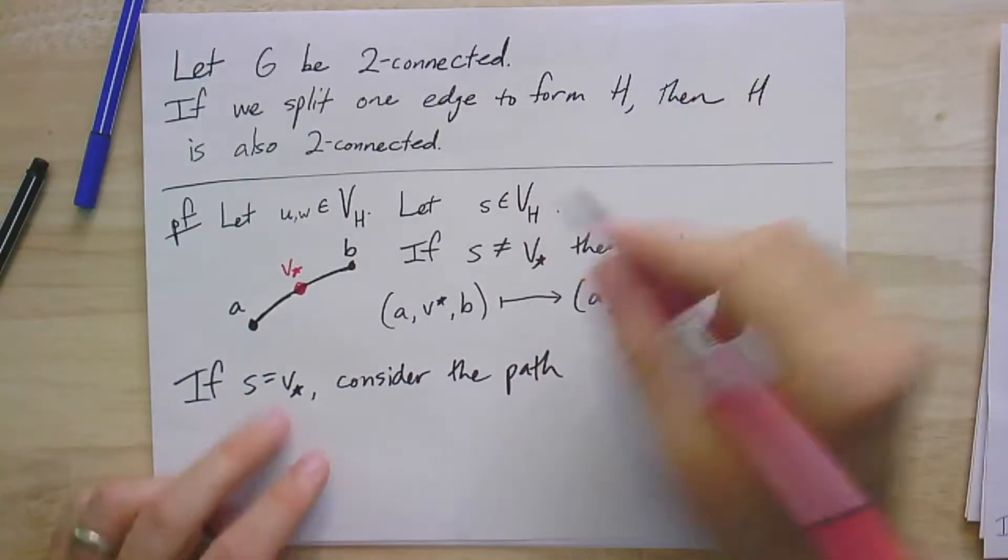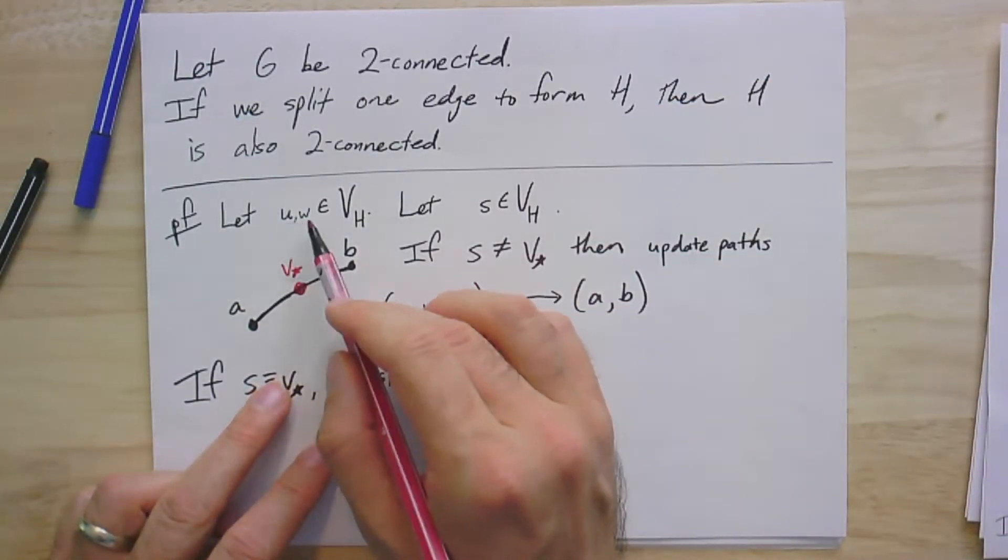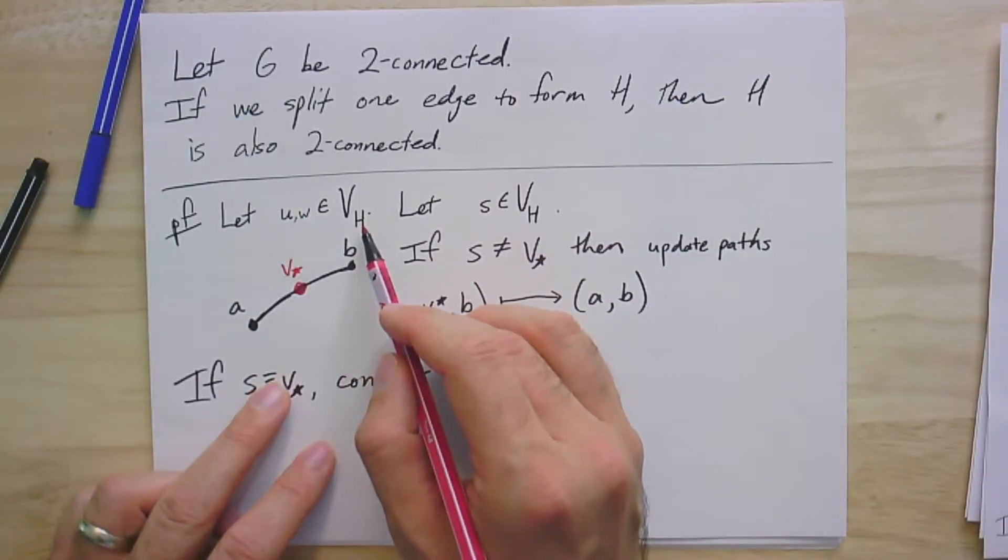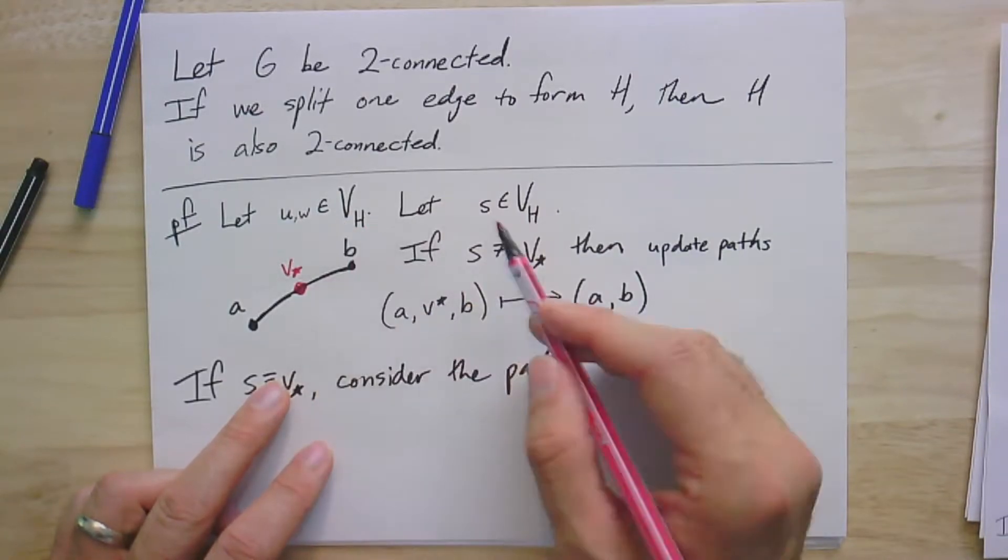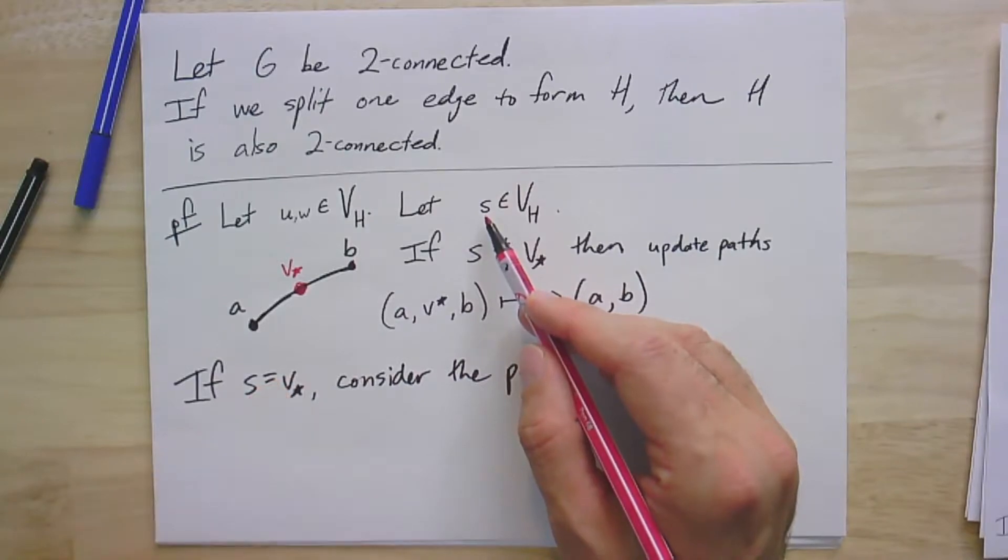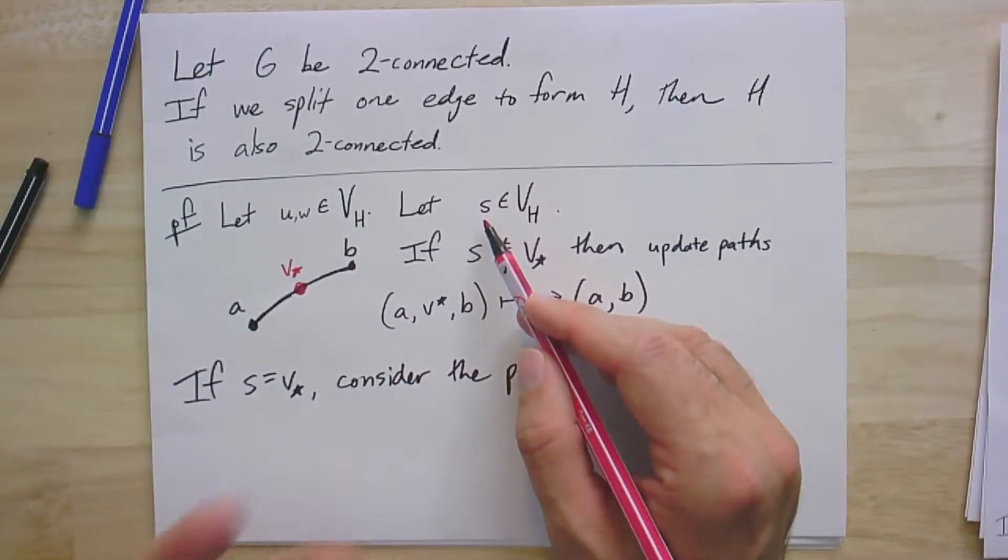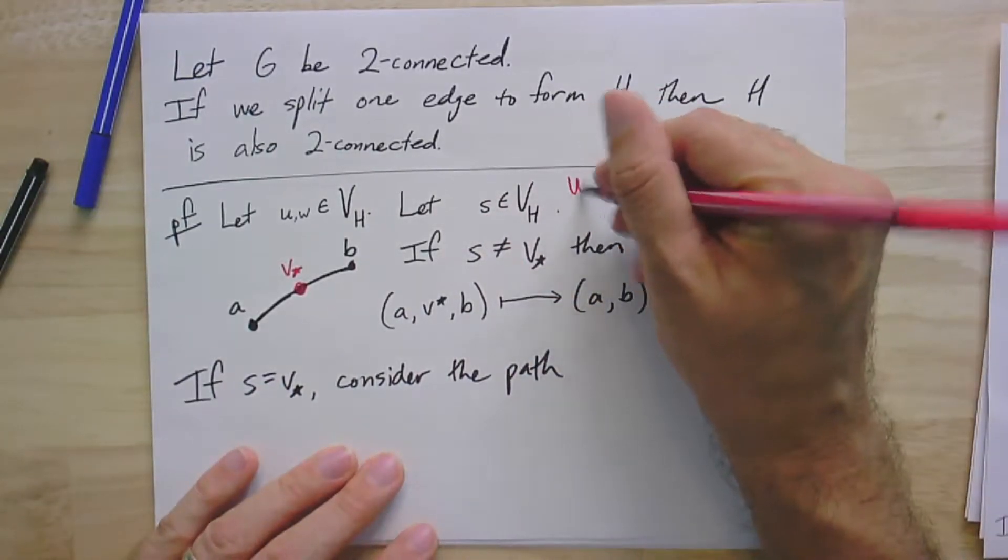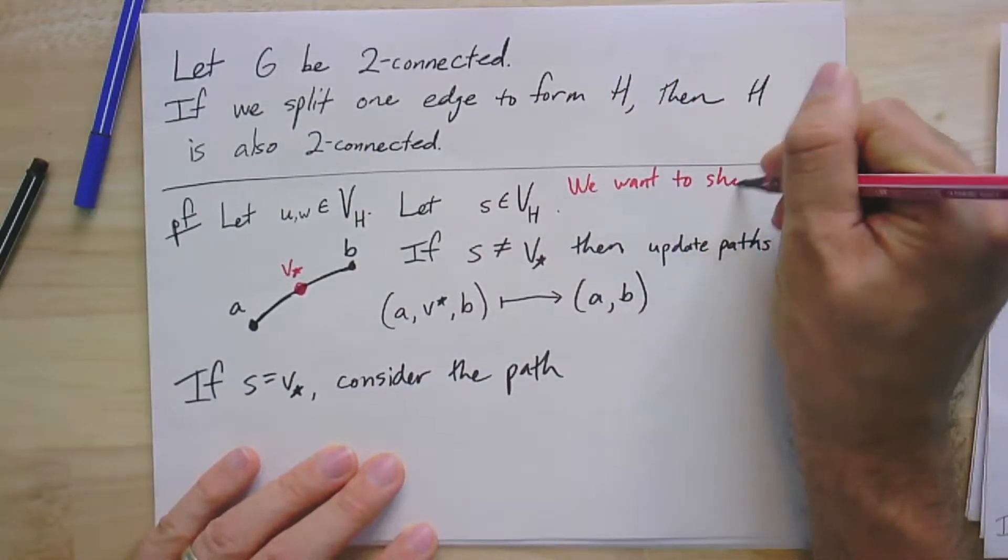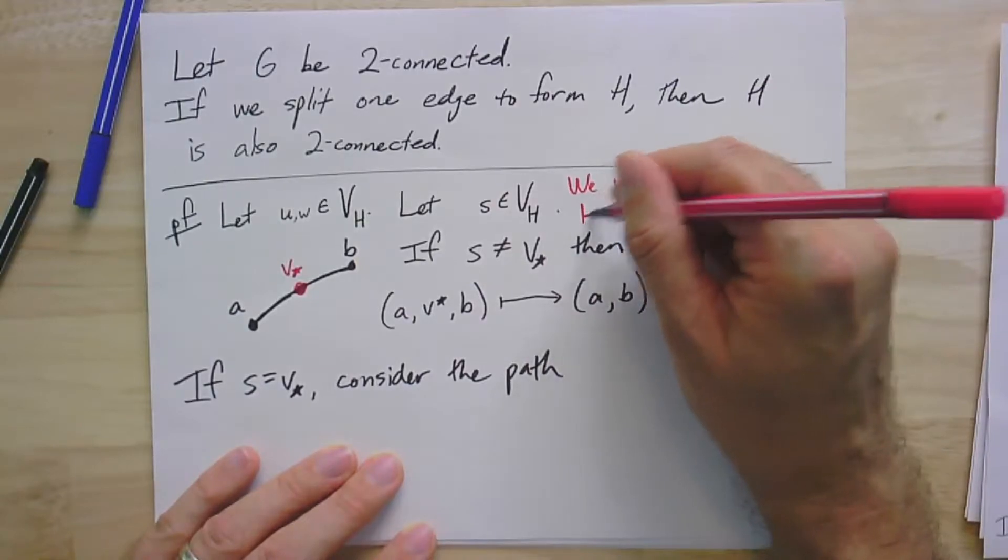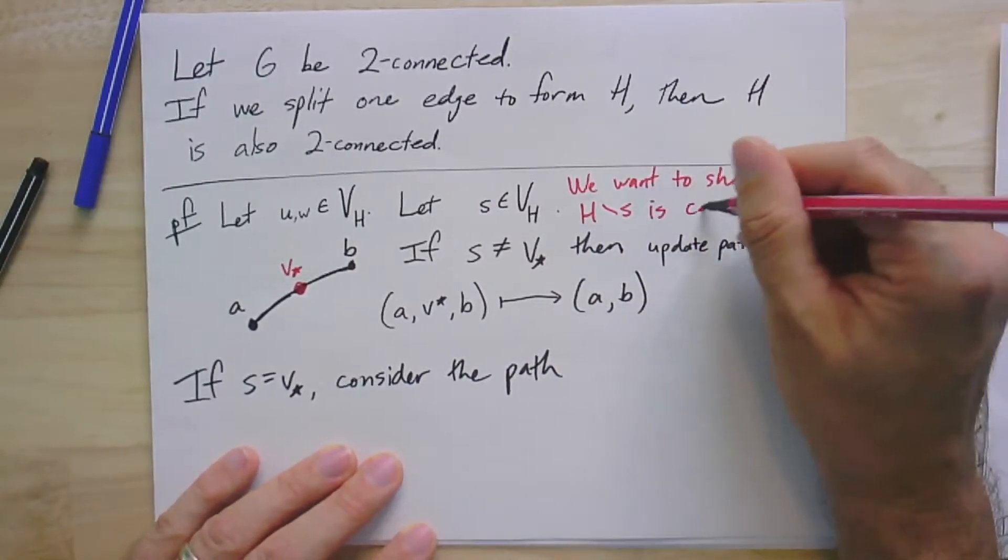Really, what we're trying to show is we take any two vertices in the vertex set of H, in this new graph, and we want to show that they're still connected after we remove any one vertex, S. So, removing any one vertex should leave a connected graph. We want to show that H minus S is connected.